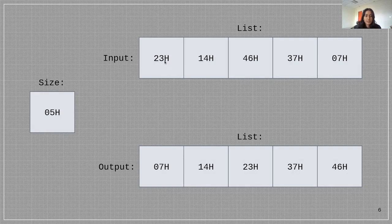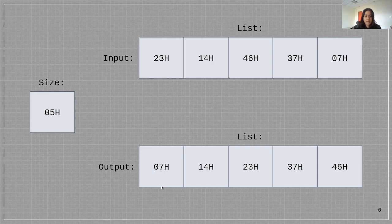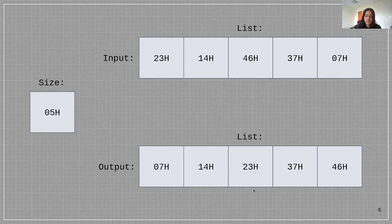The input is going to be 23, 14, 46, 37, 7 and the output will come as 7, 14, 23, 37, 46, the sorted array.